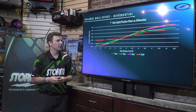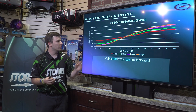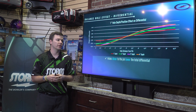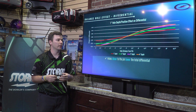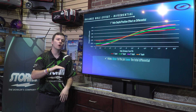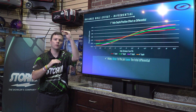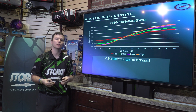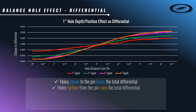You're going to notice these lines don't look anything like they did on the previous RG graph. Holes closer to the pin are going to lower the total differential — you can see that from the left side of the graph, as we get closer to the pin we're lowering the total differential. This makes sense: when you put a hole closer to the pin, the pin is the lowest RG axis. The Y is the highest RG axis. So we're raising it closer to where the high is, and the difference between the two becomes significantly smaller.